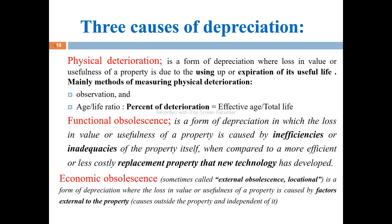Next, in the costing method, we determine depreciation. Depreciation is the reduction in the ability of an asset to generate revenue. There are three sources of depreciation: physical deterioration, functional obsolescence, and economical obsolescence.